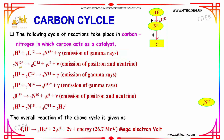Now, the unstable nitrogen-13 will become carbon-13 with a positron and neutrino emitted. Because this is unstable, you get carbon-13, a positron, and a neutrino.